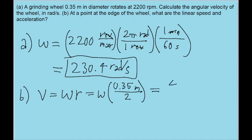So if we put this into our calculator, we find a linear speed of about 40 meters per second. So that is the linear speed.